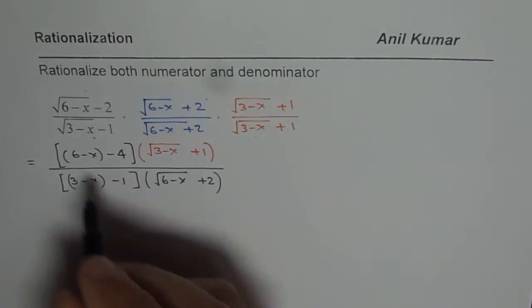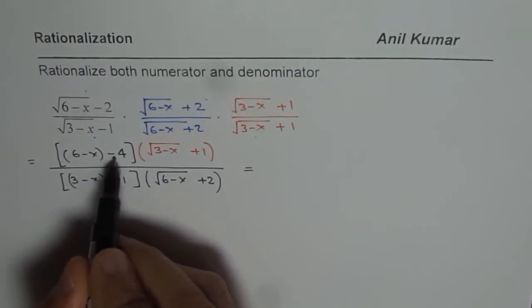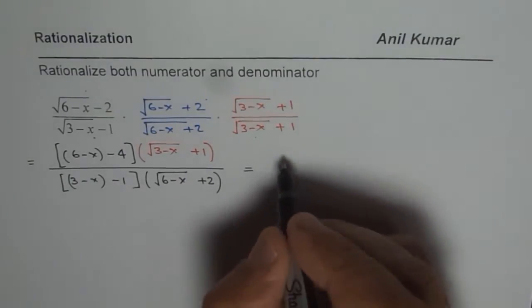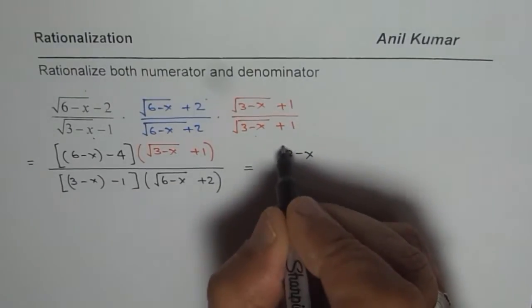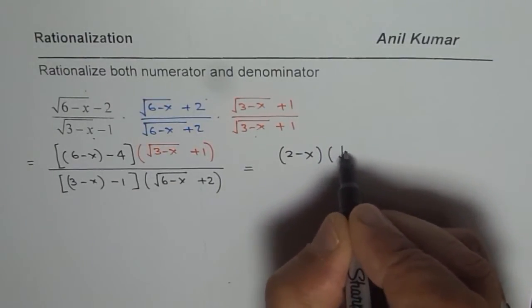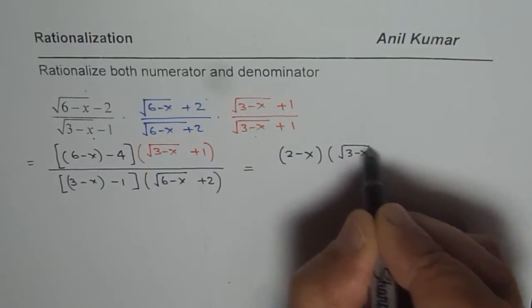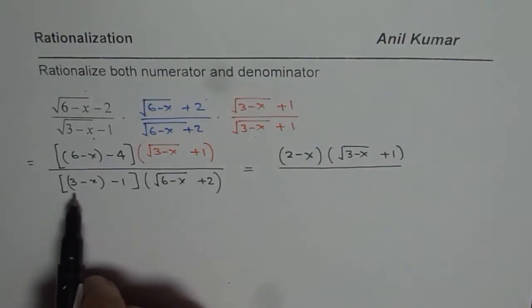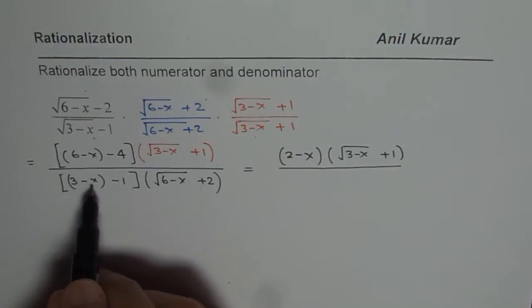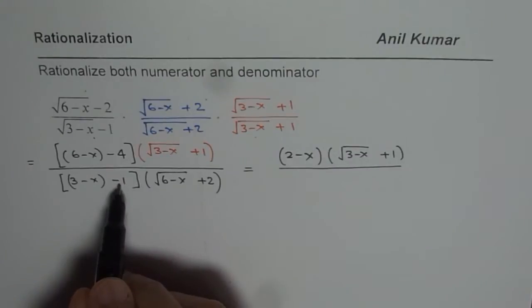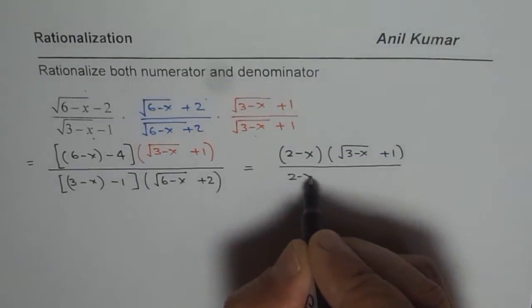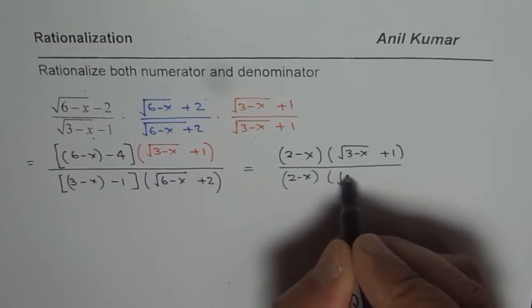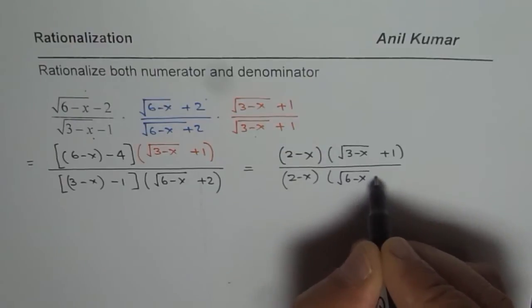Now let us simplify. In the numerator, 6 minus x minus 4 gives us 2 minus x. We also have square root of (3 minus x) plus 1 remaining. In the denominator, 3 minus x minus 1 gives us 2 minus x, and we are left with square root of (6 minus x) plus 2.